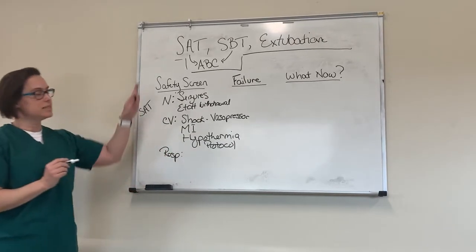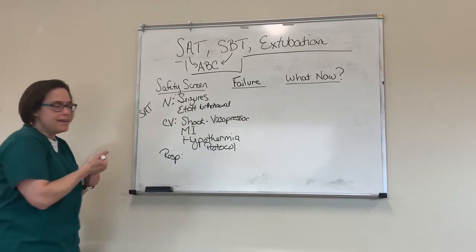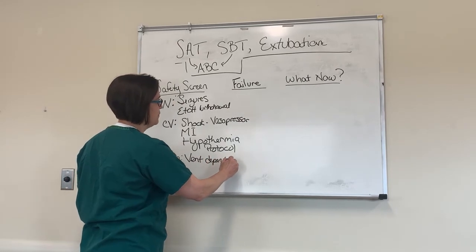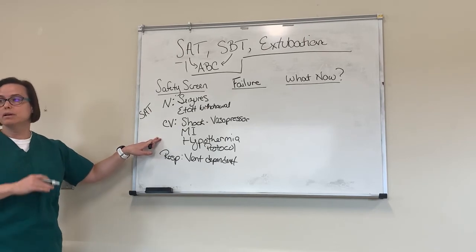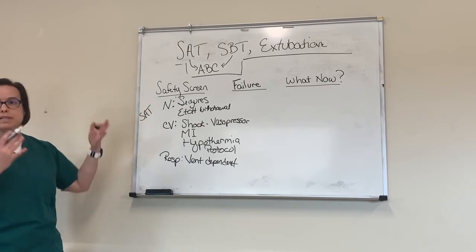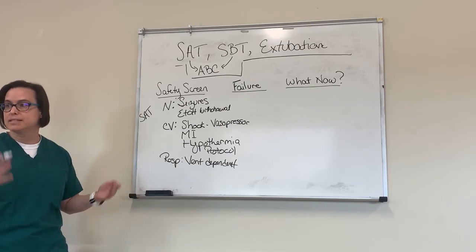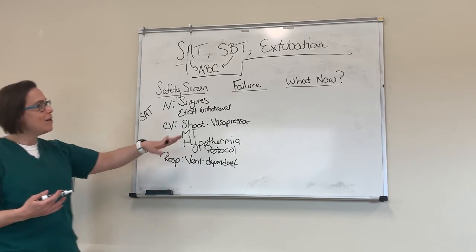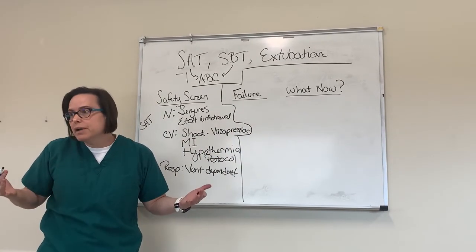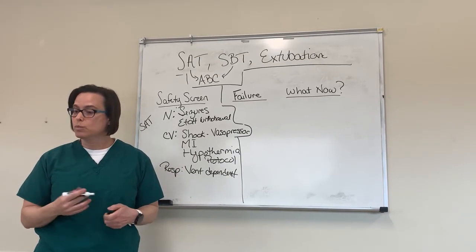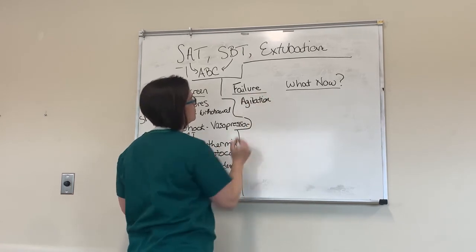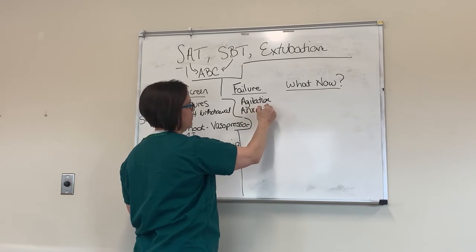So we've done our spontaneous awakening trial and our spontaneous breathing trial and were successful. Now I have to decide if I'm going to extubate — my very favorite procedure in the ICU. You're taking someone from a struggling person on a machine and making them themselves again. What do we want to know about the patient? We want to know that they're mentally intact — meaning they can follow commands. I want to know that when I take the tube out and tell them to cough, they're going to cough. They have to be able to lift their head off the bed, cough, and follow commands.